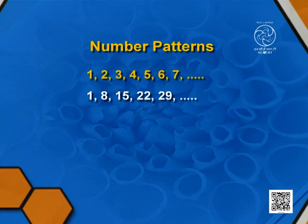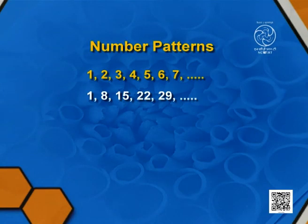Now the second pattern. It starts from 1 and increases by 7 each time. The difference between each term is 7, so we call it the common difference. The first term is 1 and the common difference is 7. You can observe this pattern in a calendar — if Sunday falls on the 1st, the next Sunday comes on the 8th, then the 15th, and so on.